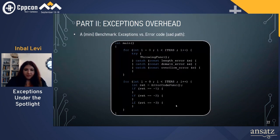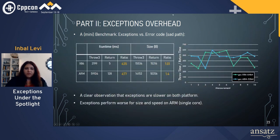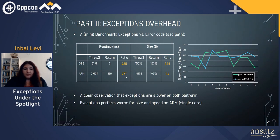Let's go deeper into the sad path, focusing on the case of throwing errors. I've compared the throwing mechanism to return code value, using throw-by-value catch-by-reference. In this mini-benchmark, you can see that exceptions are 435 times slower than the return value. I tested this on x86 and ARM — the size is more noticeably larger on ARM. There's a clear observation of overhead, and they perform worse on ARM.